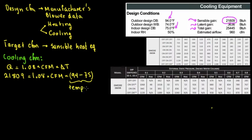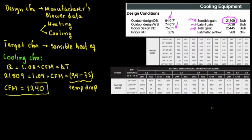This is commonly known as temperature drop. Usually we're looking at 20°F or 15°F depending on the manufacturer and conditions. Temperature drop is a very important factor to measure for proper equipment performance. After doing the math, the target CFM comes out to 1,240 CFM for cooling.